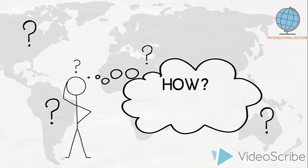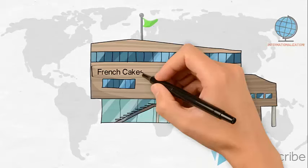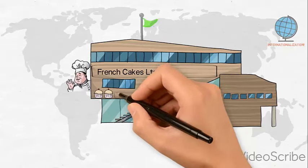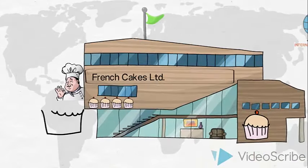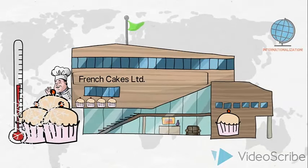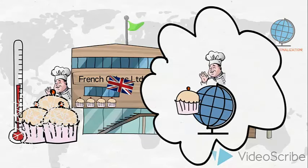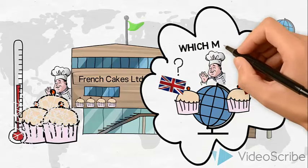So how can we go about making an informed choice of which foreign market to enter? Let us use an example. This French business produces French cakes and desserts. Well-educated confectioners develop recipes and create delicious cakes and desserts, which are frozen immediately after production and distributed to a variety of catering companies, restaurants, and cafes around France. French Cakes would like to expand to international markets, and their eyes are set on either the UK or Denmark.